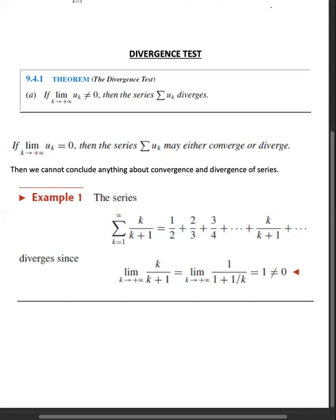Conversely, if the limit as k tends to infinity of u_k is equal to zero, then the series may converge or may diverge — it can either converge or diverge. So the divergence test is only used to test whether the series is divergent or not. If the limit of u_k is not equal to zero, then the series is divergent — that is the only decision we can make using the divergence test.